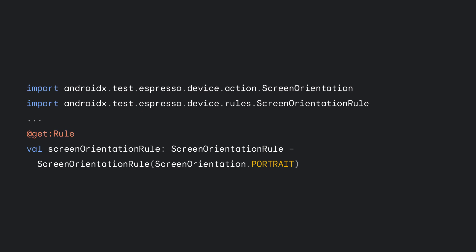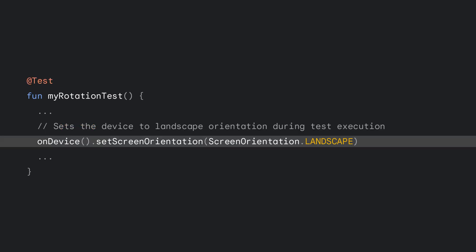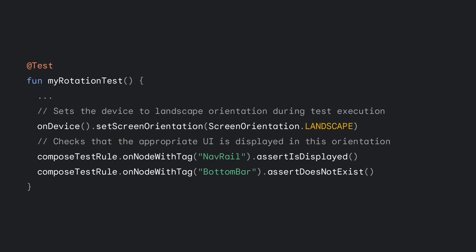Let's see how this works with a test that performs a basic device rotation. First, we want to ensure a consistent starting state for our device, so we create a rule to set the device to portrait mode. We can then create a test for what happens when the screen rotates to landscape. Before the configuration change is complete, the test asserts that the UI adapts to the new layout as expected.